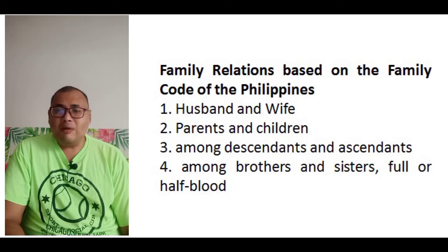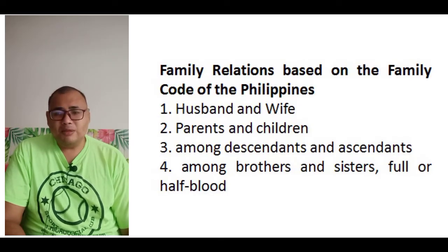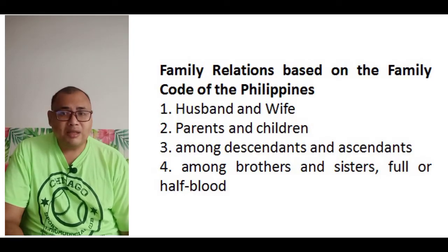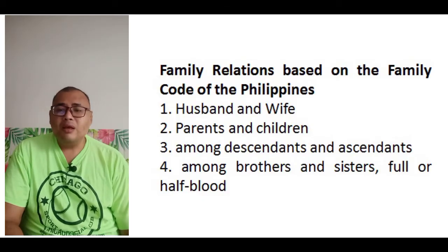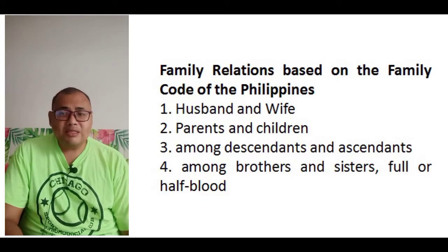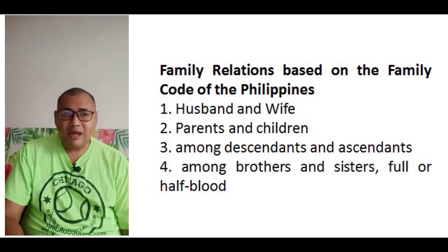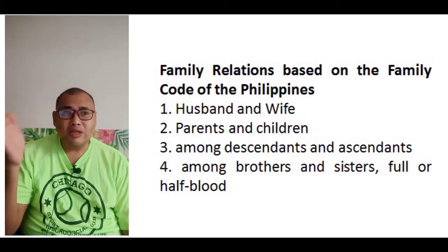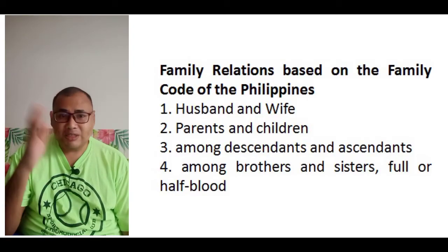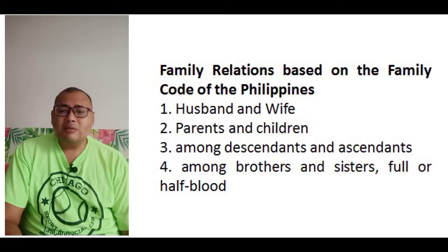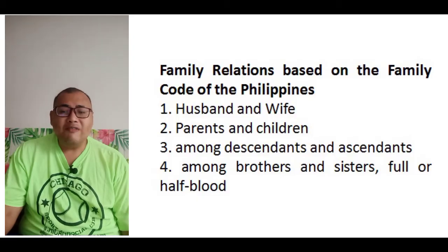For family relations based on the Family Code of the Philippines, we have the following: first, husband and wife; second, the relationship between parents and children; third, descendants and ascendants — descendants going downward (parents, children, grandchildren) and ascendants going upward; and fourth, brothers and sisters, whether full or half blood.